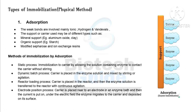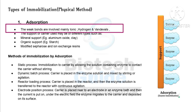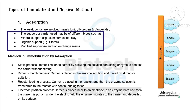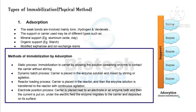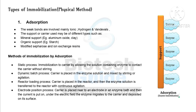First, in physical immobilization — adsorption. For exam purposes, you need to explain: what kind of bonds are involved, what kind of support or matrix is used, the method of immobilization, and advantages and disadvantages. In adsorption, the bonds involved are ionic, hydrogen, and van der Waals bonds. Support matrices include mineral support like aluminum oxide, clay, inorganic support, starch, modified Sepharose, and ion exchange resin. Methods include the static process, dynamic batch process, reactor loading process, and electrodeposition process.